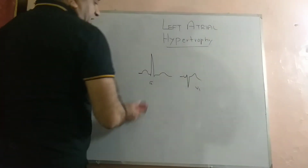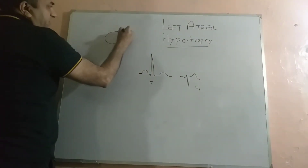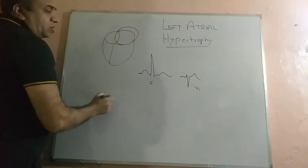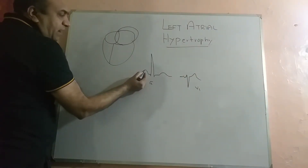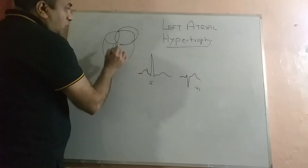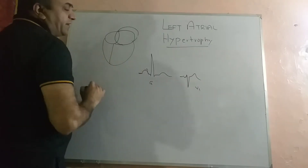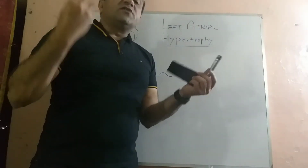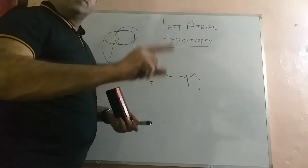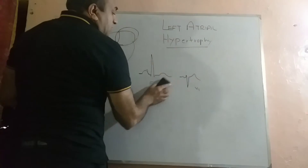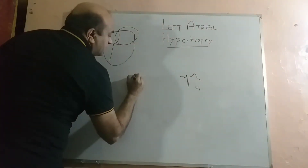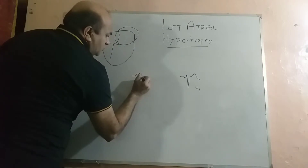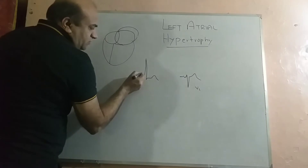In cases of mitral valve stenosis, the left atrium becomes enlarged. The second part of the P wave becomes heightened compared to the first portion because of left atrial enlargement. This is called a notched P wave — like the hump of a camel with two notches. The morphology now shows a first hump due to right atrial depolarization and a second hump due to left atrial enlargement. This is known as a double notched P wave.